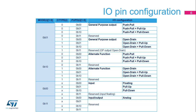The configuration of any I/O pin is achieved through four 32-bit registers: GPIO-X MODER, GPIO-X OTYPER, GPIO-X OSPEEDR, and GPIO-X PUPDR. Register GPIO-X MODER selects the functionality of the I/O pin: digital input, digital output, alternate function, or analog.